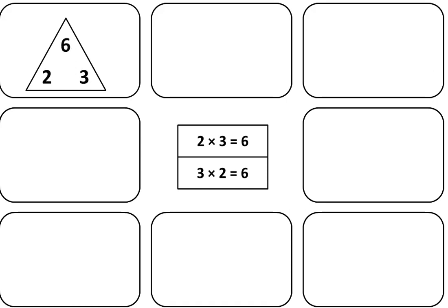Now, let's move to the next space. In the next space, write 2 times 3 is equal to 6; 3 times 2 is equal to 6; 6 divided by 2 is equal to 3; and 6 divided by 3 is equal to 2. You can see how these ideas are connected to the triangle.